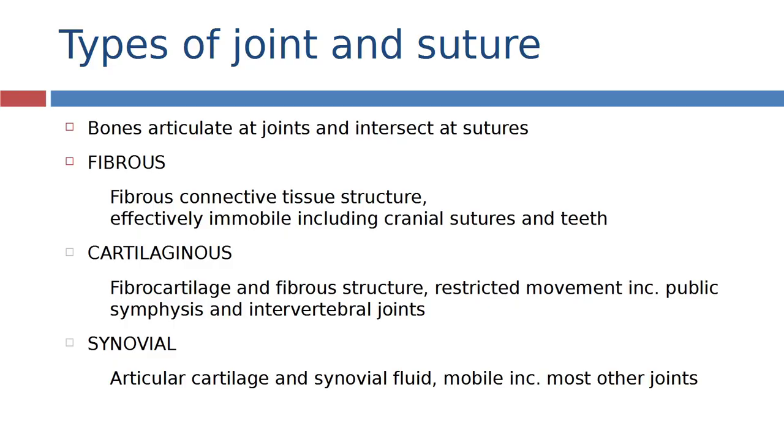We can also think about the way in which they interact together because the human skeleton as a unit functions as one when you're alive. You might be familiar with the fact that bones will articulate together at joints and that sometimes they also intersect at sutures. This is what goes on within the skull. There are three major types of joints.